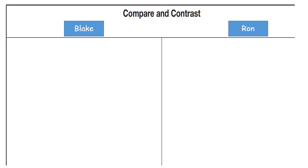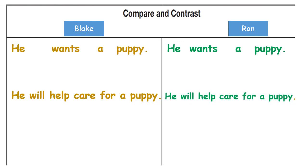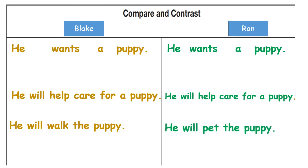Let's now compare and contrast between Blake and Ron. Both of them want a puppy and they will both help care for a puppy. For Blake, he will walk the puppy, but Ron will pet the puppy.